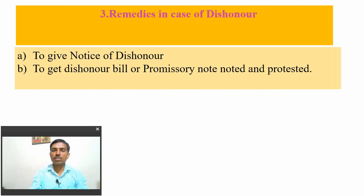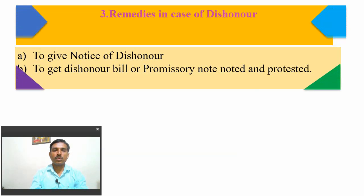The remedies available in the case of dishonor — whatever measures are taken when a particular bill, promissory note, or cheque is dishonored — include: giving notice of dishonor to all parties, except in the case of a cheque; and noting and protesting the dishonored bill or promissory note. Under the Negotiable Instrument Act 1881, it is necessary to note down the dishonor before a registrar or notary public and obtain certification. This is called protest under Section 100, while Section 99 covers noting.